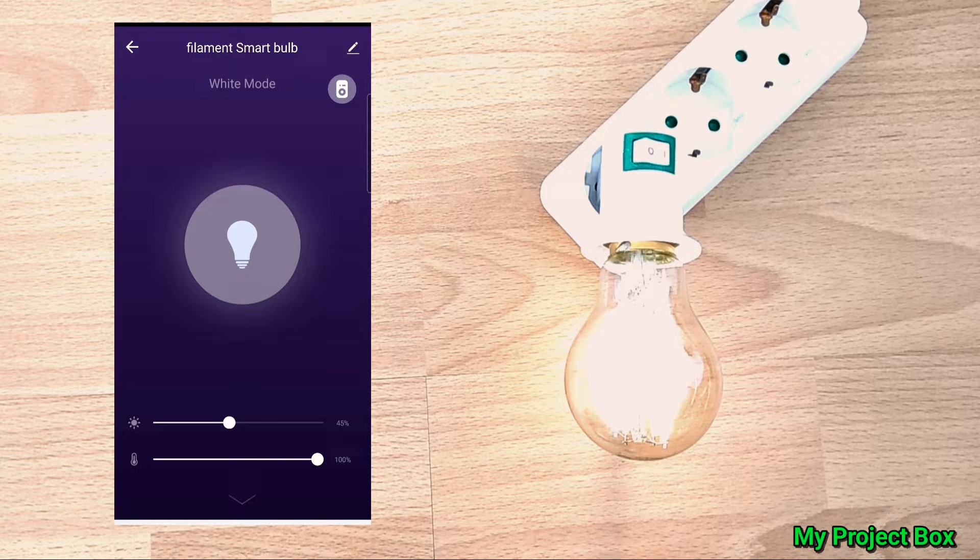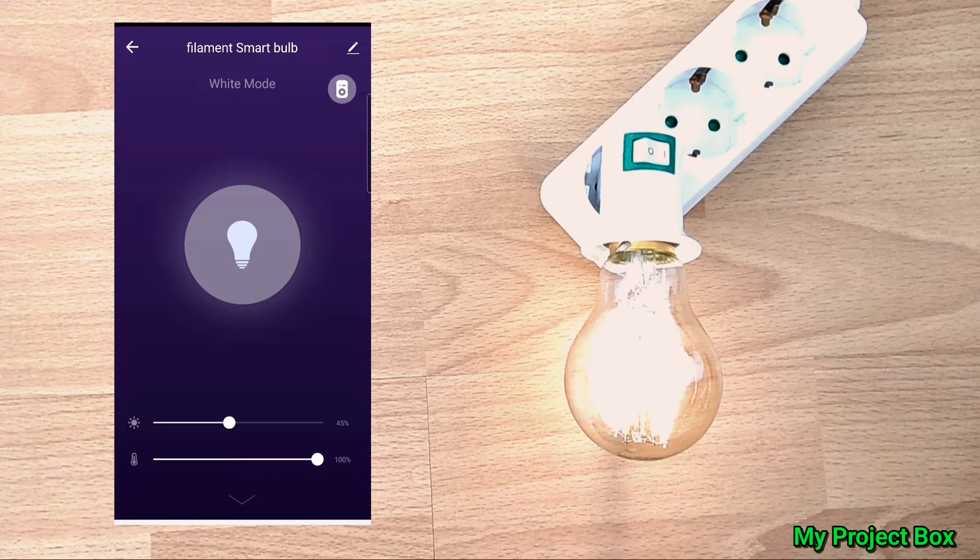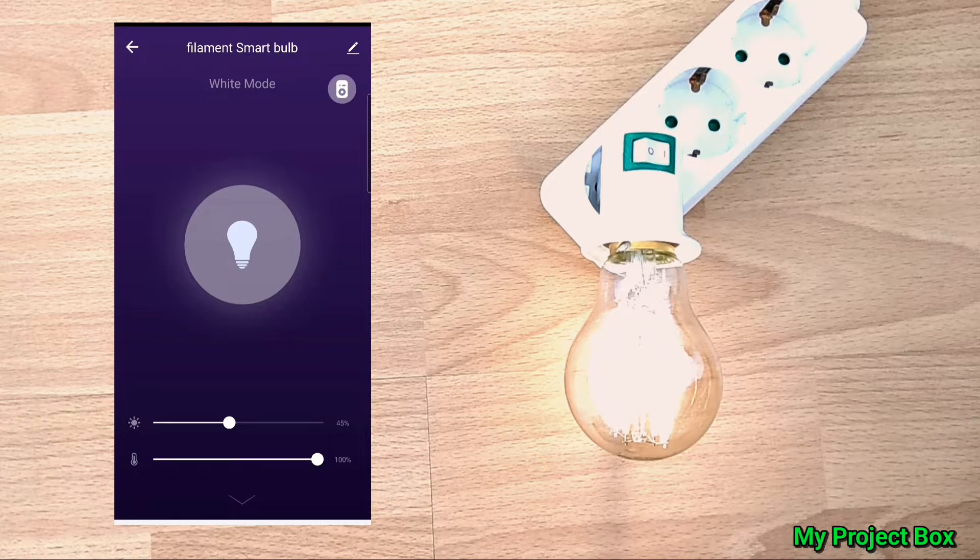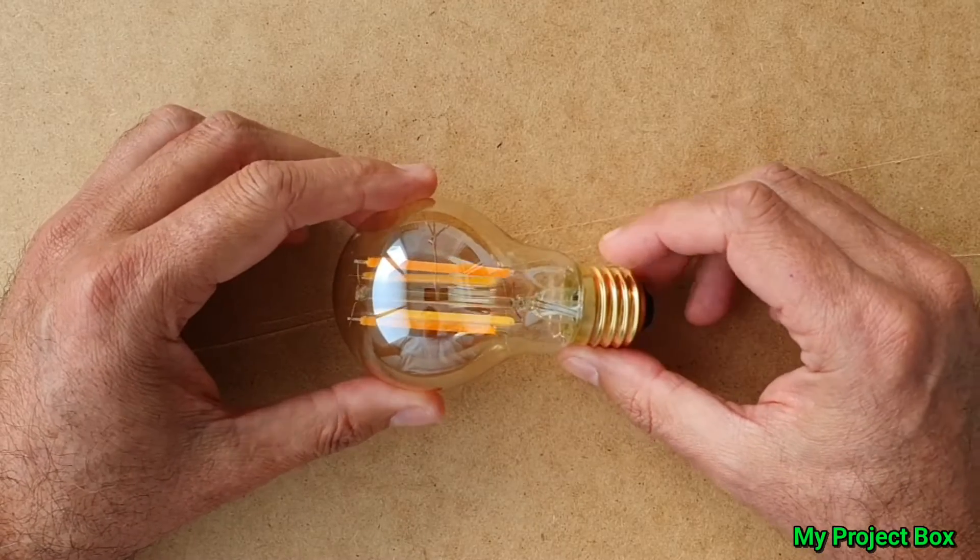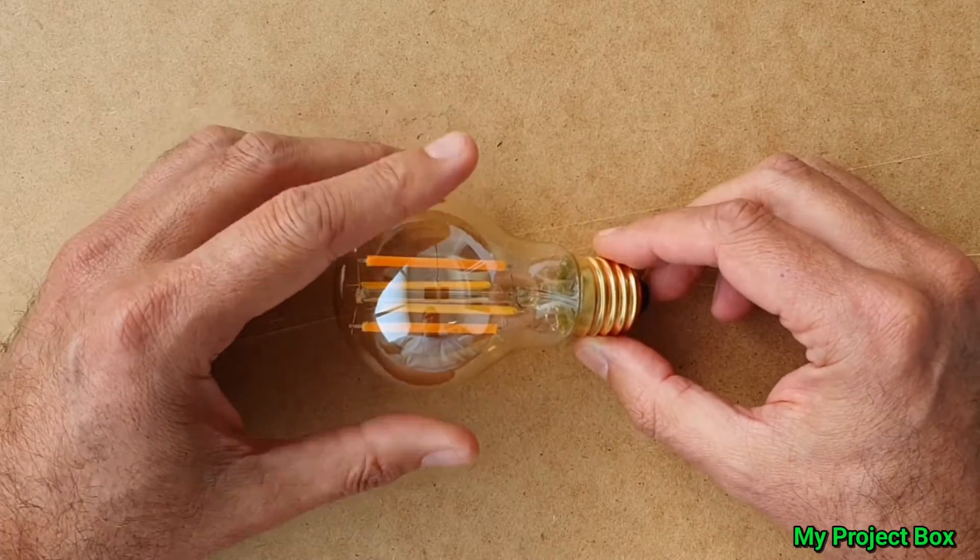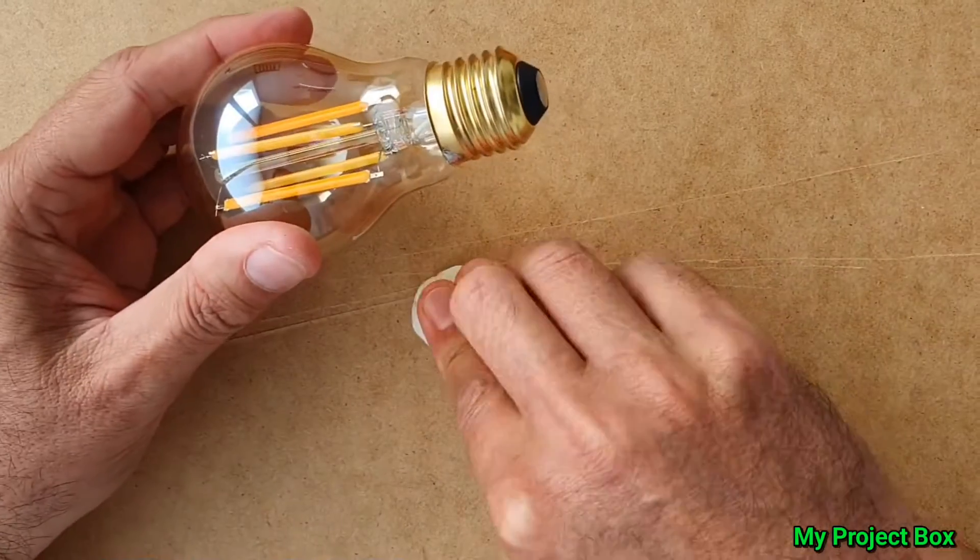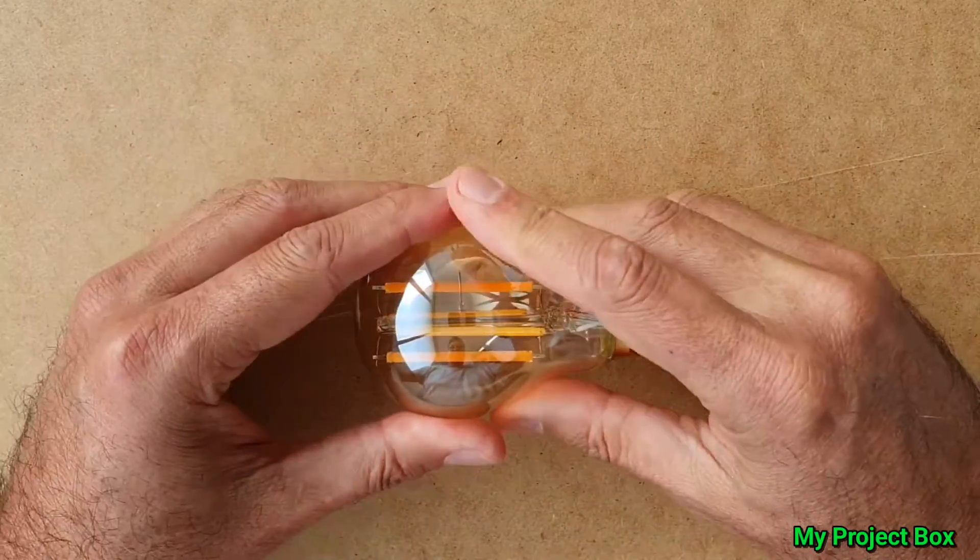Anyway, but that's not what we're here for today. What we want to do is we want to see what's inside this bulb. So let's see if we can somehow get into it. Let's give it some support with my trusty blue tack so it doesn't go flying off the table.